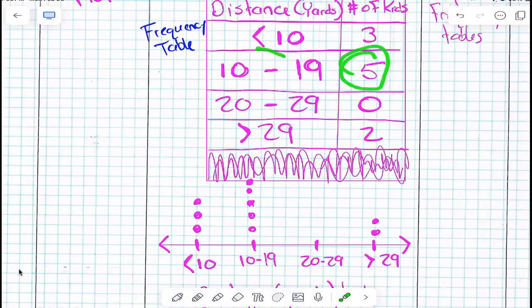Notice how there's five kids that can throw the ball between 10 and 19 yards. You notice that? How many kids does it say down here can throw the ball between 10 and 19 yards? It should match, right?